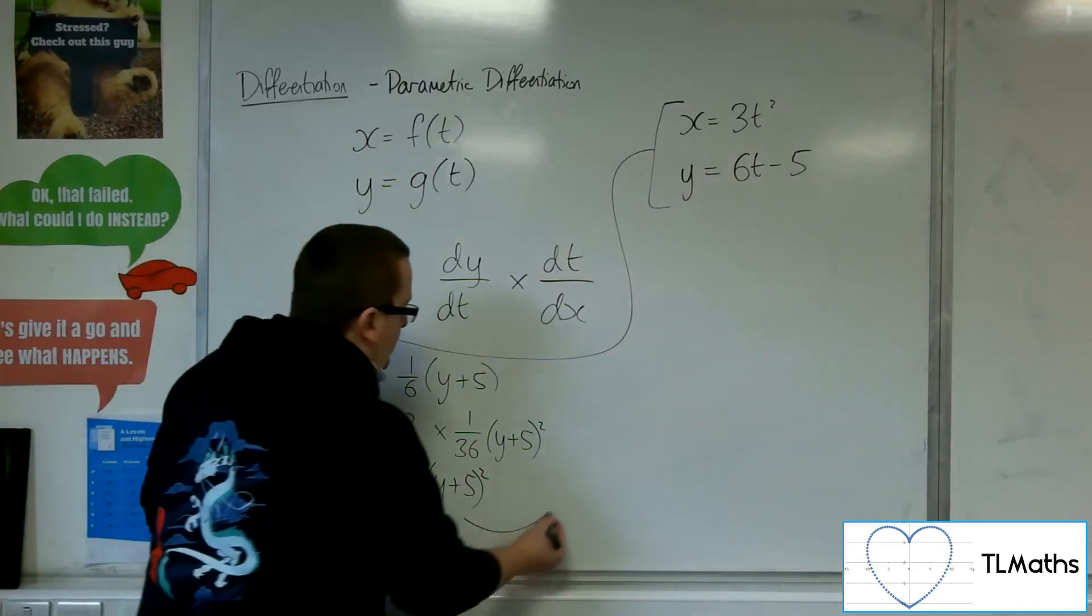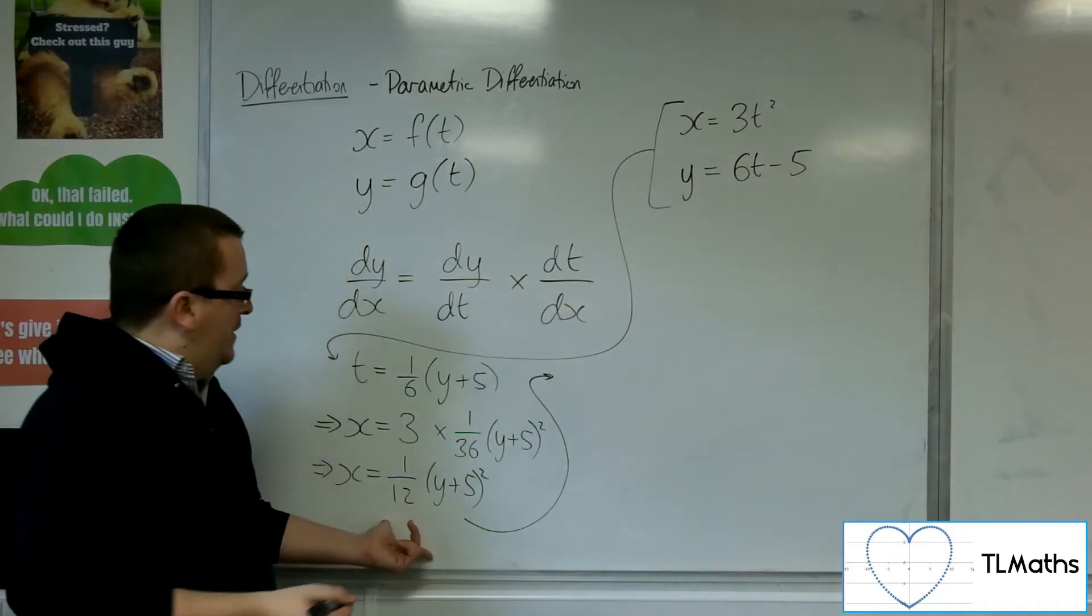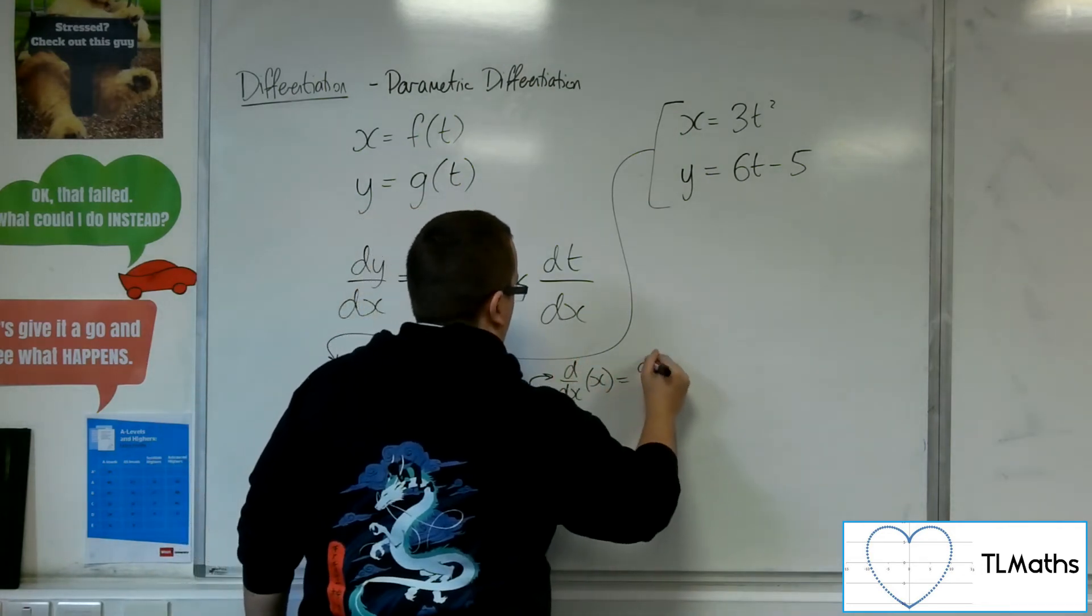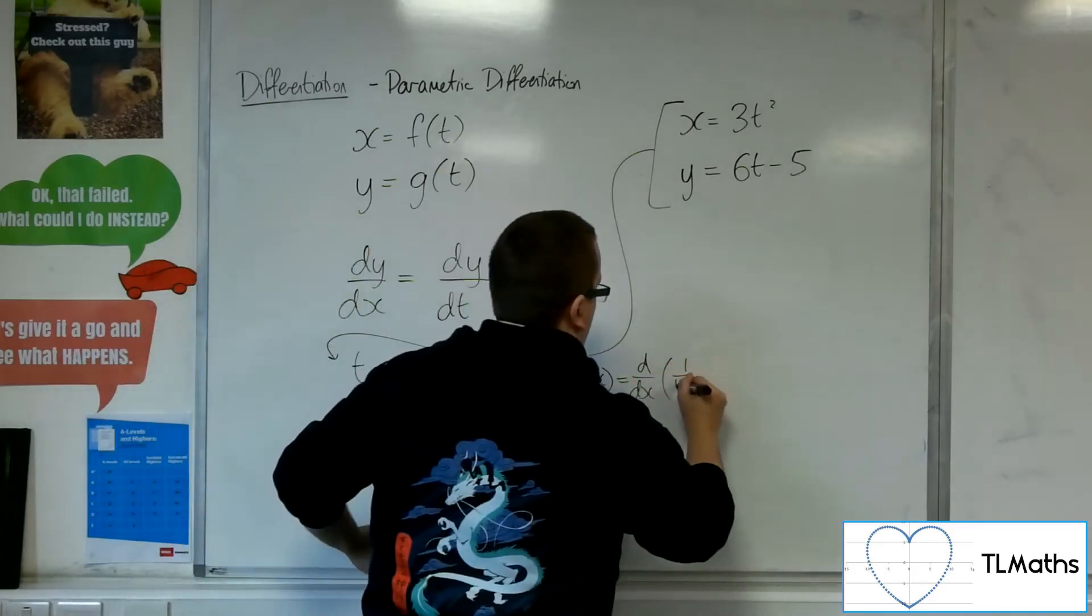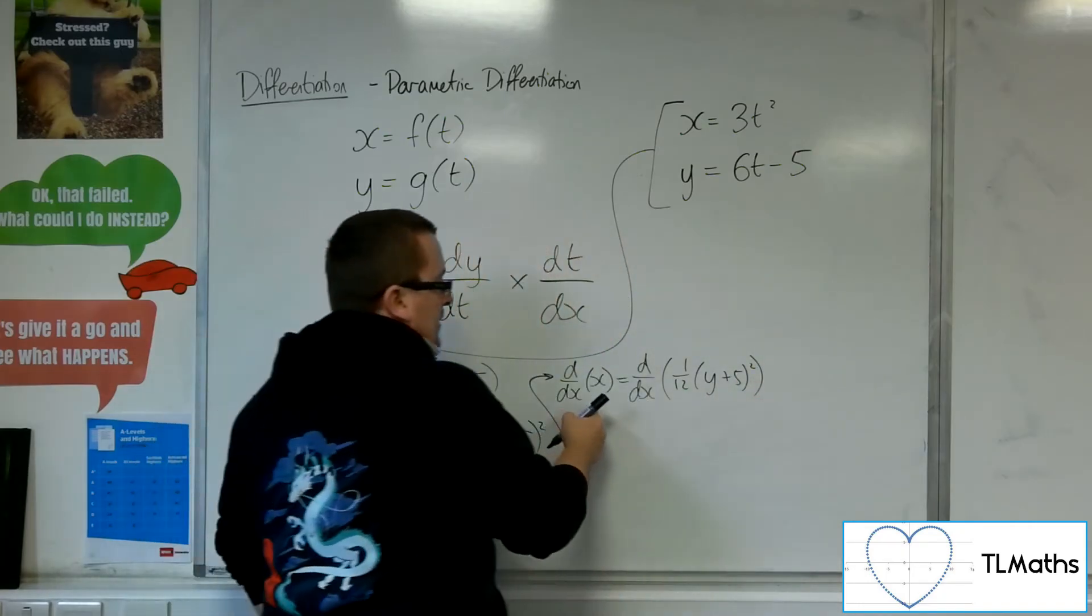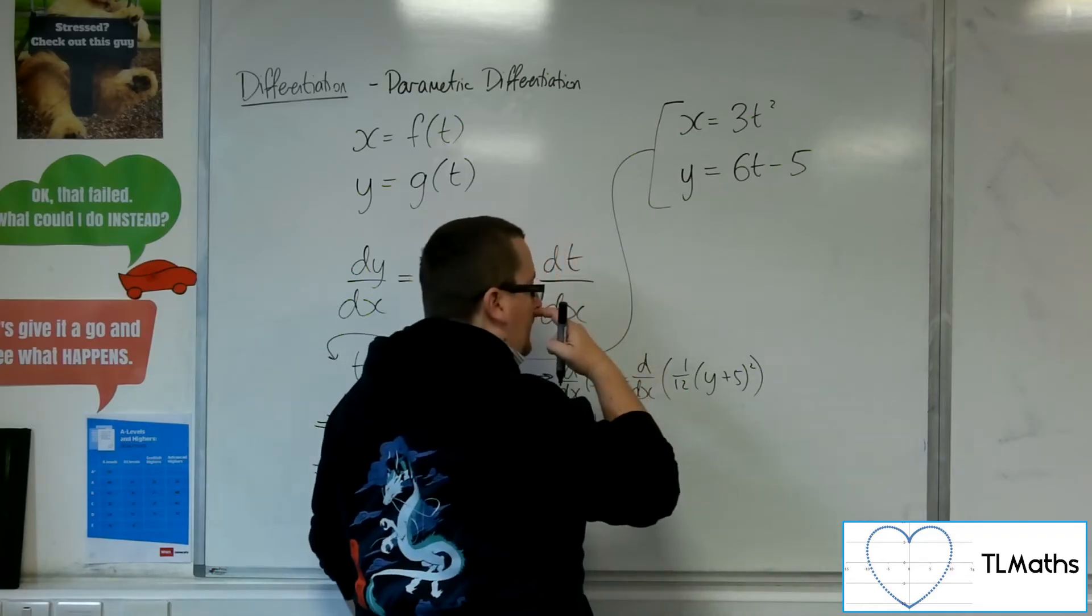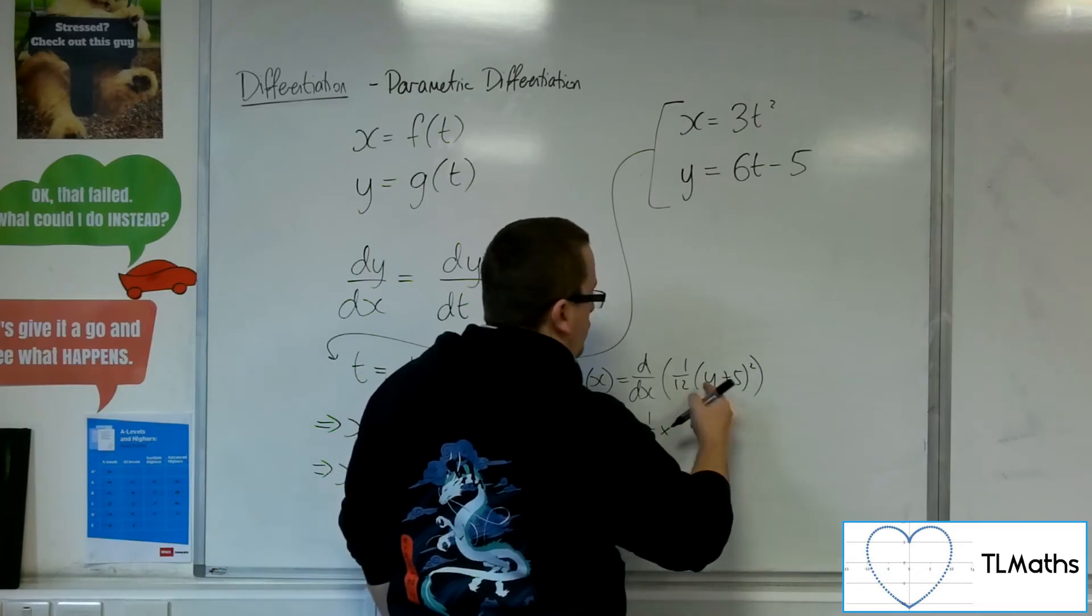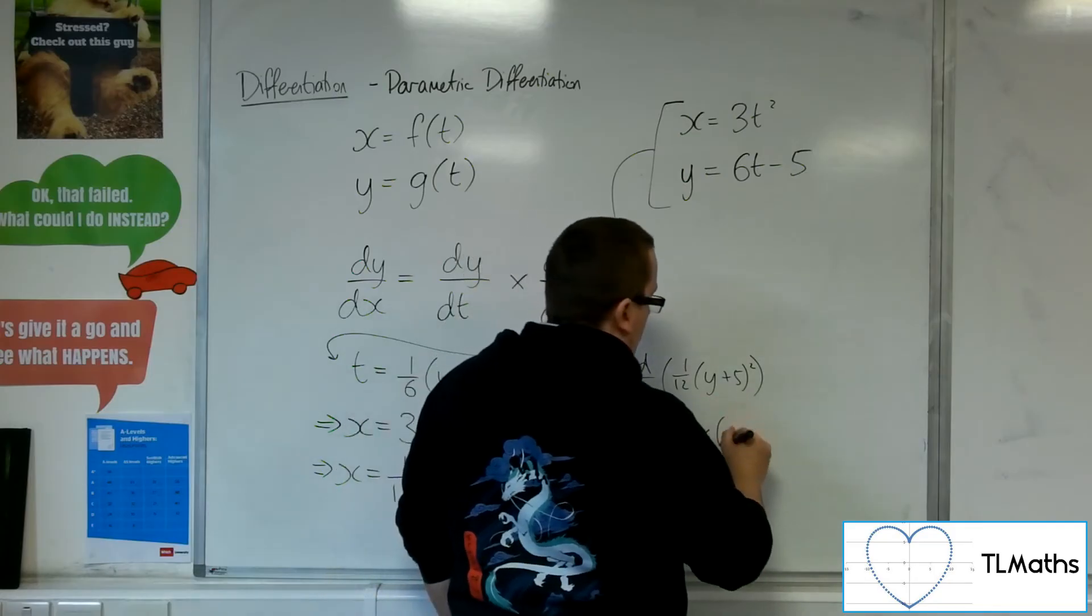I could then use implicit differentiation to find dy by dx. So differentiating the left-hand side with respect to x and differentiating the right-hand side with respect to x. OK. Now, differentiating the left-hand side is just 1. Differentiating the right-hand side, I'm going to get 1 12th times by the derivative of what's inside, which is dy by dx.